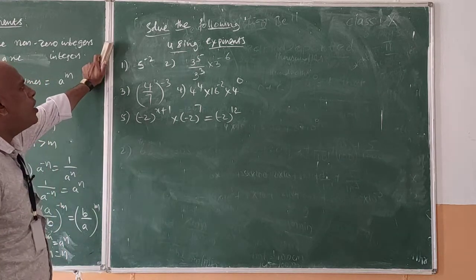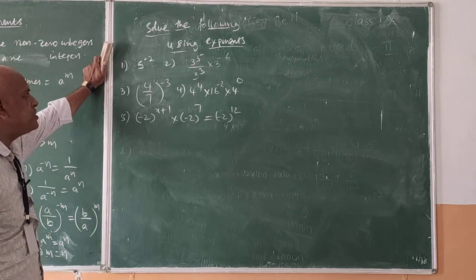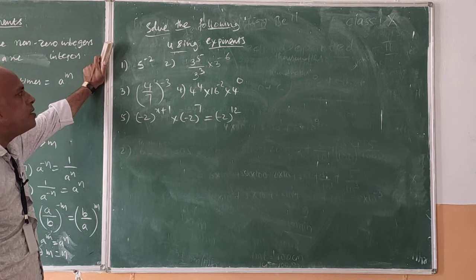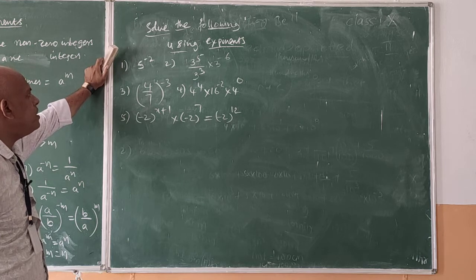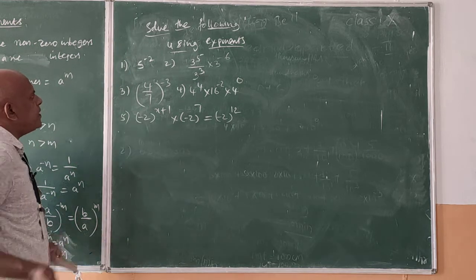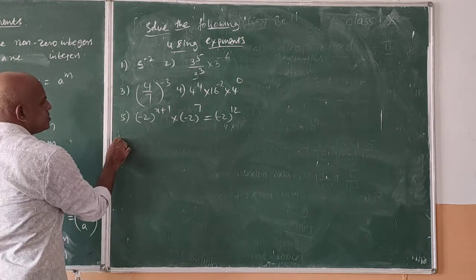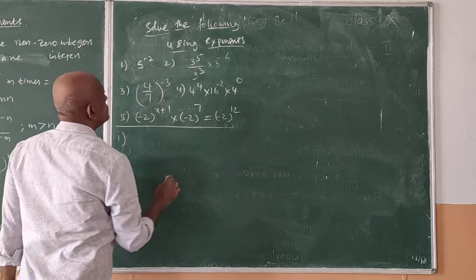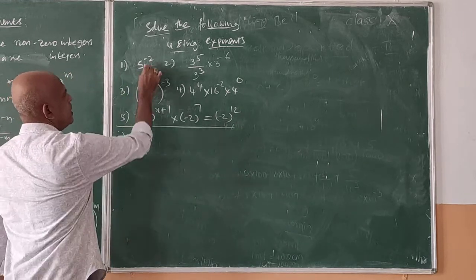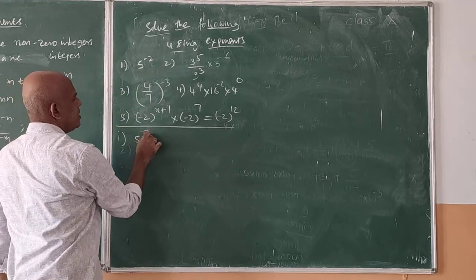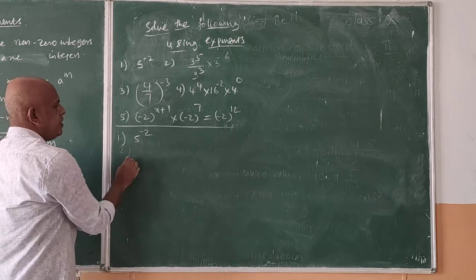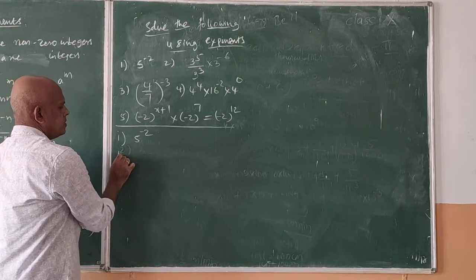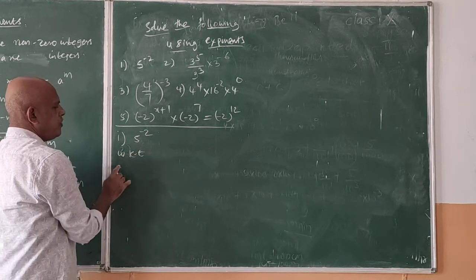Okay, now solve the following using laws of exponents. We are going to problems based on the laws of exponents. Some problems are given here. The first problem is 5 to the power of minus 2. By using the laws of exponents, we know the short form.